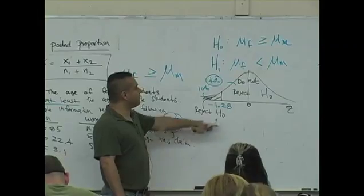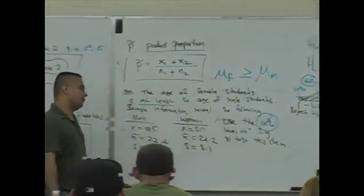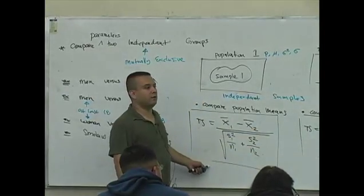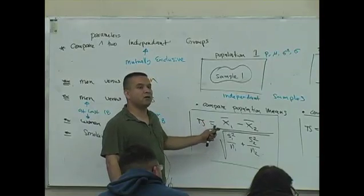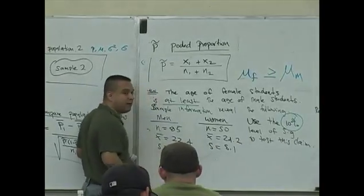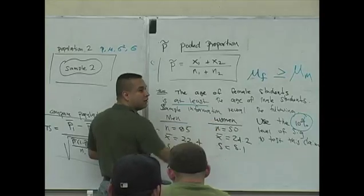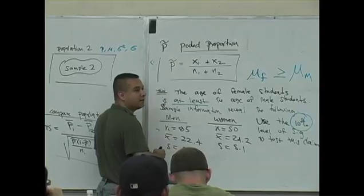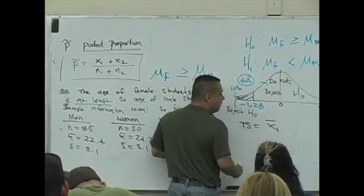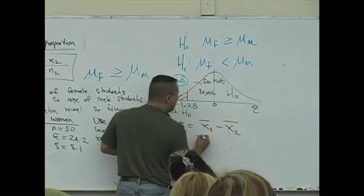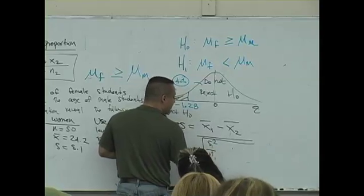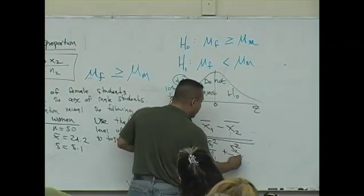Now we apply the test statistic formula for comparing two means. You must be careful: parameter one is always on the left — that's the females — and parameter two is on the right — that's the males. So the first sample mean is 24.2 (women) and the second is 22.4 (men). The formula is: sample mean one minus sample mean two, divided by the square root of the first variance over sample size one plus the second variance over sample size two.